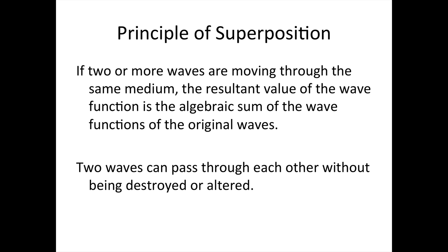To do this, we're going to need to make use of the principle of superposition. The principle of superposition tells us that if two or more waves are moving through the same medium, the resultant value of the wave function is the algebraic sum of the wave functions of the original waves. Basically, it just means add the waves together at every point. When waves travel through a medium, they can pass through each other without being destroyed or altered. What we see is the superposition of those waves, but if the waves are finite and end, then you'd see the waves separate out eventually.